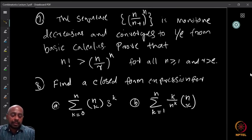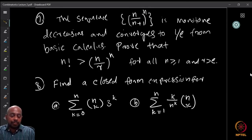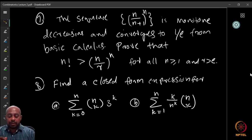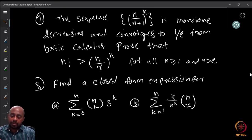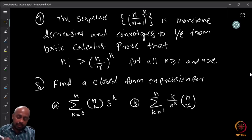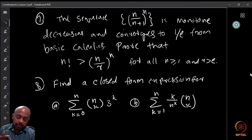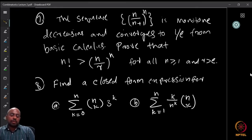Seventh question: the sequence (n/(n+1))^n for n ≥ 1 is monotone decreasing and converges to 1/e from basic calculus. Prove that n factorial is greater than (n/r)^n for every n ≥ 1 and r strictly greater than e, where e is the base of the natural logarithm. Eighth question: find a closed form expression for the summation from k=0 to n of C(n,k)·3^k, and also for the summation from k=1 to n of k·(n/something)^k·C(n,k), using the techniques we have learned.